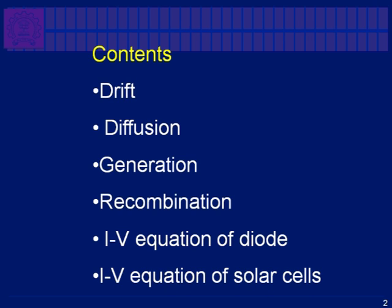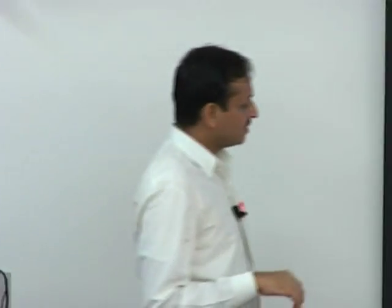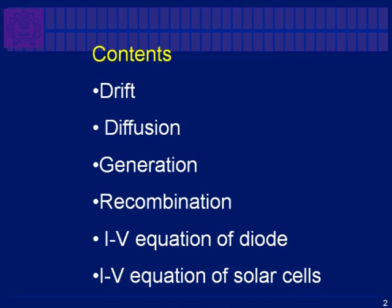In any solar cell, these four things are happening all the time. We need to understand these processes very well so that we can design a new kind of solar cell, or understand which process is contributing to good or poor performance. We will then look at the IV equation of the diode in a qualitative manner, and then the solar cell equation where we ended yesterday.